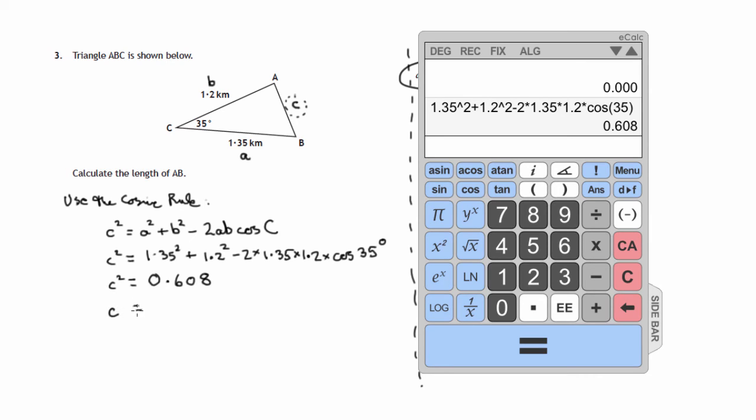To find out what c is, we need to take the square root of that. So the square root of that answer is approximately 0.780.